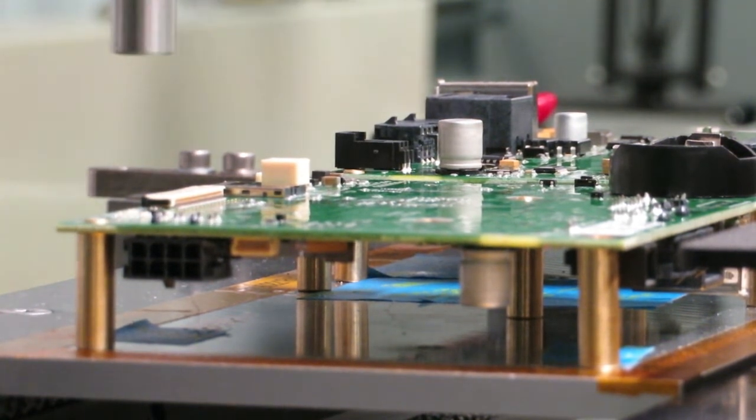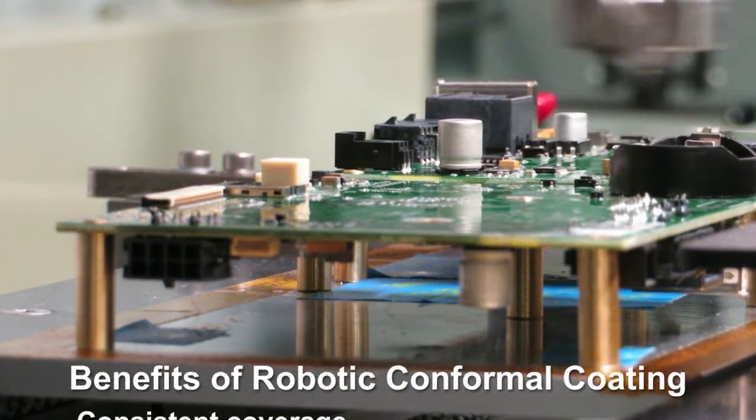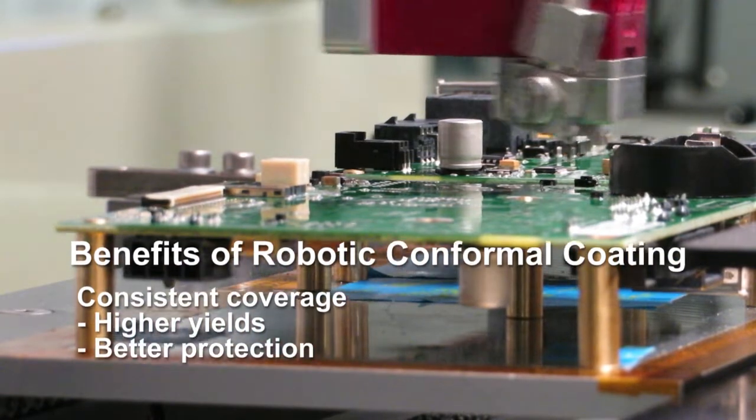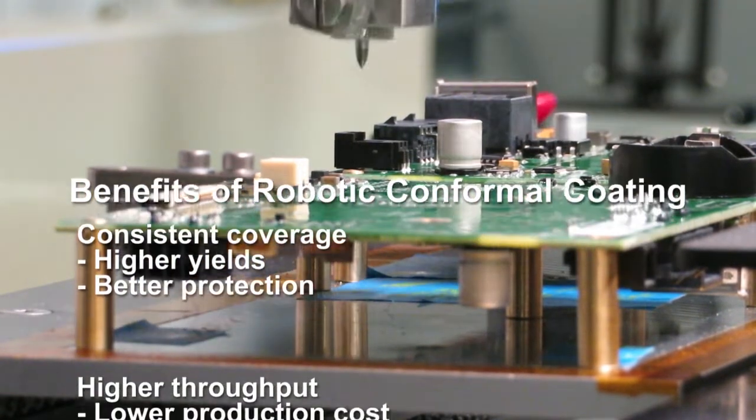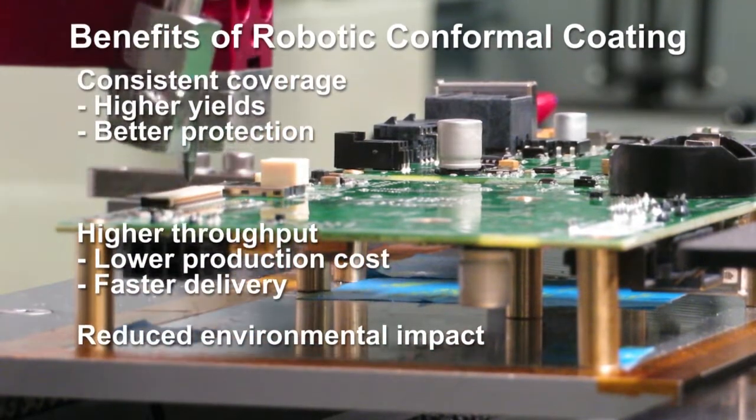Whether you use urethane or acrylic, the benefits of robotic conformal coating include more consistent coverage for higher yields and better protection of PCB assemblies, higher throughput for lower production costs and faster delivery, and reduced environmental impact through reduced waste.